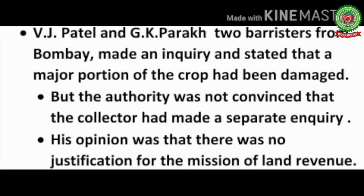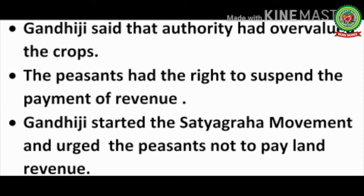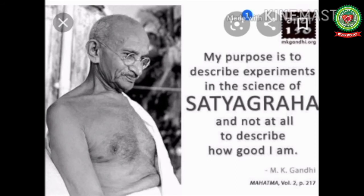Gandhiji said that the authority had overvalued the crops and that the peasants had the right to suspend the payment of revenue. He started the Satyagraha movement and urged the peasants not to pay land revenue. He compared Satyagraha to a scientific approach, saying he had not started it to prove himself good — it was a weapon to get demands fulfilled from the British government.